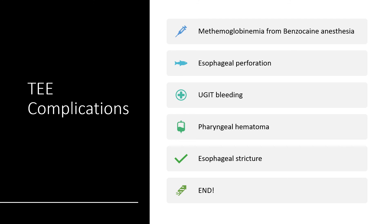The complications of transesophageal echo include methemoglobinemia from benzocaine anesthesia and odynophagia. Because this is an invasive procedure passing through the esophagus, there can be perforation. This may lead to upper gastrointestinal tract bleeding, and when blood accumulates within the pharynx, there will be pharyngeal hematoma. With scarring and healing by fibrosis, there may be dysphagia from esophageal stricture.